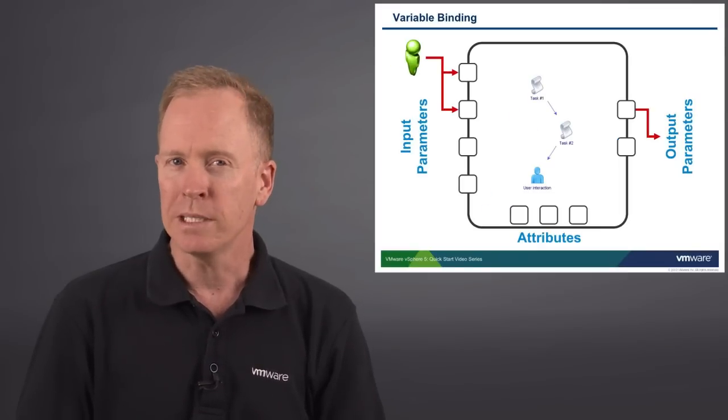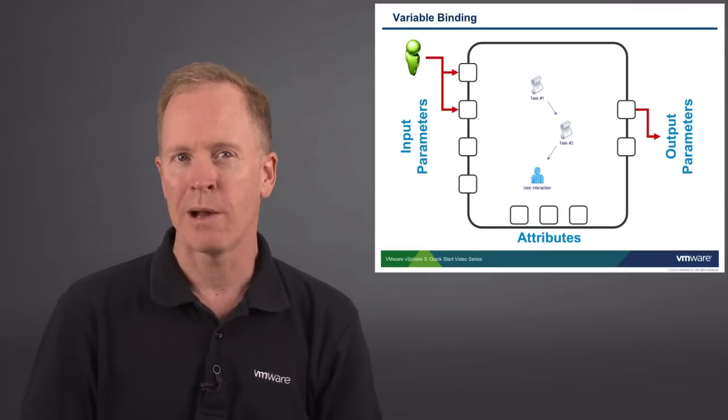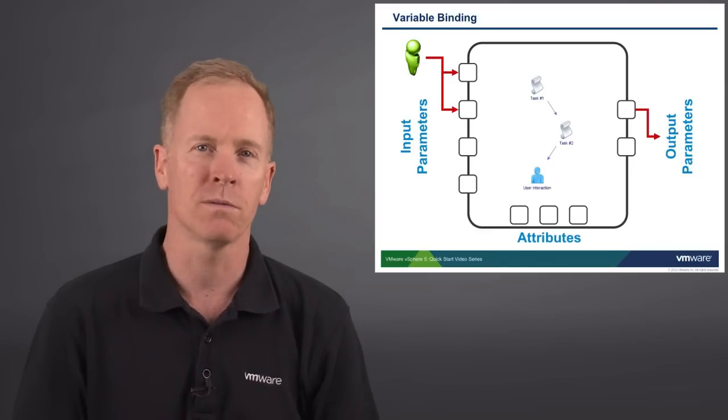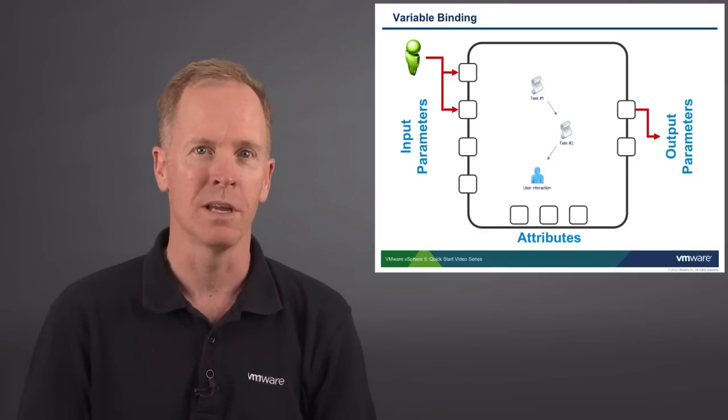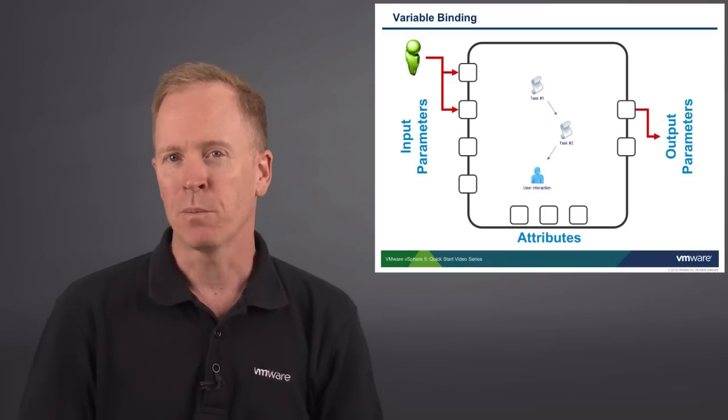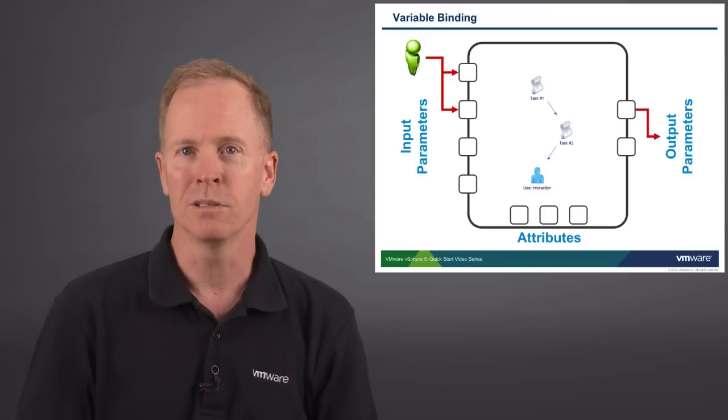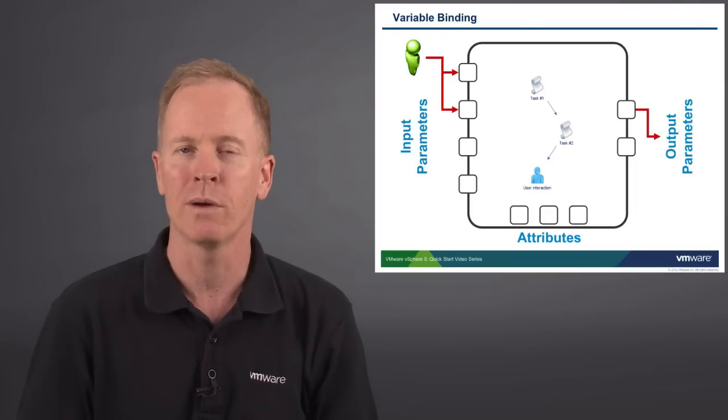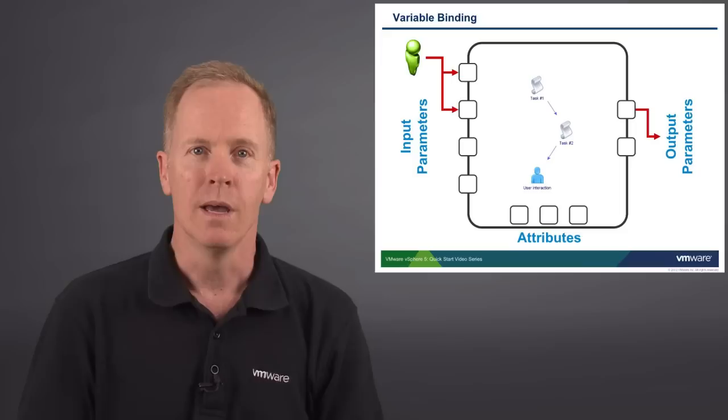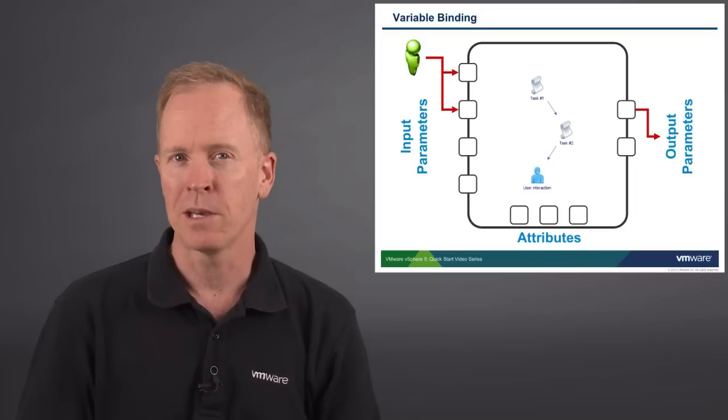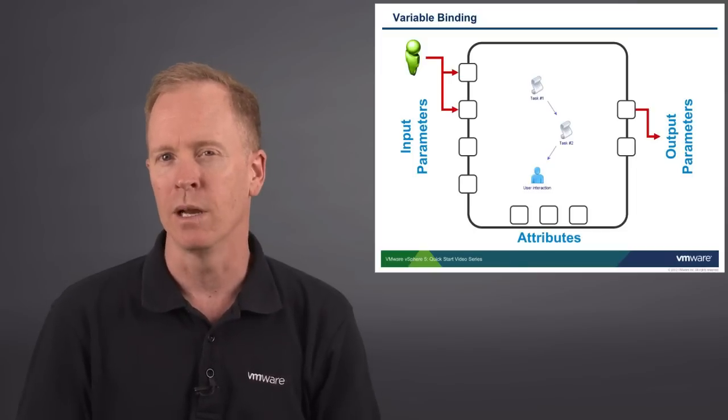As we said in the preceding video, input parameters allow us to take information from a user. When the user runs the workflow, he's able to supply information. That information is passed through input parameters. Output parameters, on the other hand, are used to pass information from the workflow, out of the workflow, and back to the user, or whoever's calling the workflow.